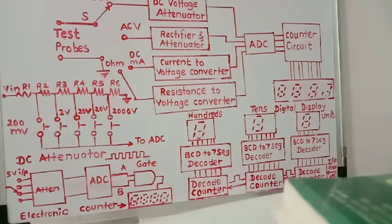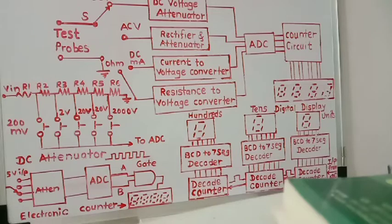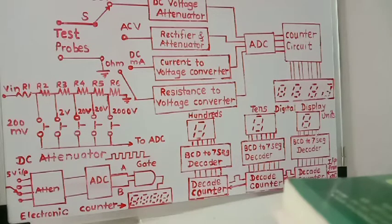First of all we will see what are the advantages of the digital multimeter over the analog multimeter. The analog multimeter was not so accurate and there were some errors in analog multimeters, so in place of analog multimeters we use digital multimeters. It is more accurate, we read a direct reading on the display, accuracy is maximum, it avoids loading effect, it is smaller in size, and it is very easy to operate.